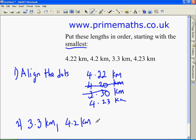2 is less than 3, so you'll have 4.22 kilometers. Strike it through.